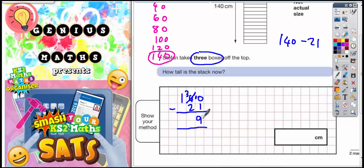10, take away 1 is 9. 3, take away 2 is 1. And 1, take away nothing is 1. So the final answer is 119cm. And that's what needs to go in this box down here. 119cm. There we go.